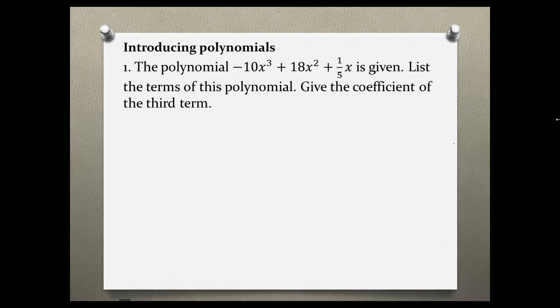Introducing polynomials. Problem number one. The polynomial negative 10x cubed plus 18x squared plus one fifth x is given. List the terms of this polynomial. Then give the coefficient of the third term.